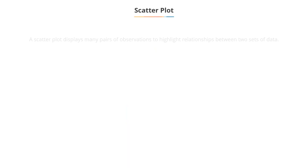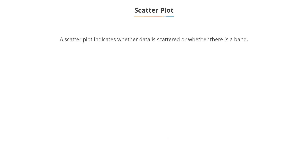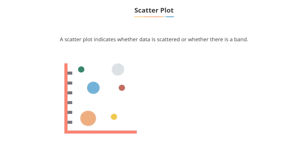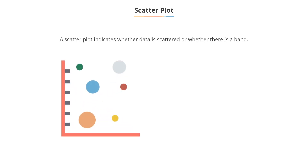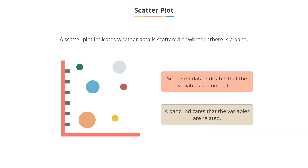Advanced charts. A scatter plot chart is a display of several pairs of observations to highlight relationships between the two sets of data. A scatter plot will indicate whether data are scattered across the graph or whether there is a band. When data are scattered, it is an indication that the two variables are unrelated. Existence of a band implies that the variables are related.